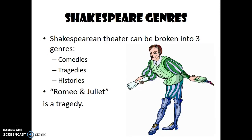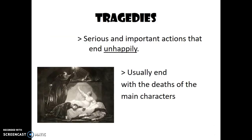Shakespeare had three main genres: he broke them up into comedies, tragedies, and histories. Romeo and Juliet is a tragedy. As you've likely heard, Romeo and Juliet die at the end of the play — hence, this would be considered a tragedy. Tragedies are serious and have important actions that end unhappily, usually ending with the deaths of the main characters. Spoiler alert: Romeo and Juliet die. You'll know this as soon as you read the prologue, because they tell you in the first three minutes of the play that they die at the end.